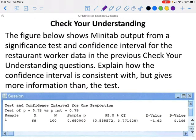Let's check our understanding. The figure below shows Minitab output for a significance test and confidence interval for the restaurant workers data in the previous Check Your Understanding question. Explain how the confidence interval is consistent with, but gives more information than, the test.